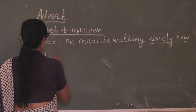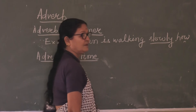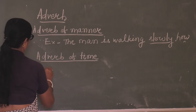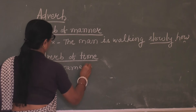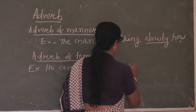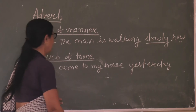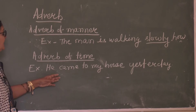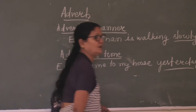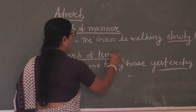Then ADBHAR of time. Here you can give one example: 'He came to my house yesterday.' What happened here in this example? He came to my house yesterday. When did he come to my house? Yesterday. So here, 'yesterday' shows the time. Today, yesterday — these show the time. They are called ADBHAR of time.